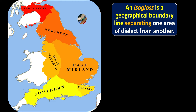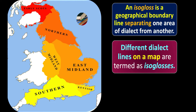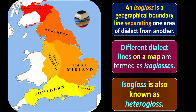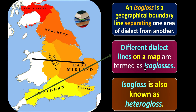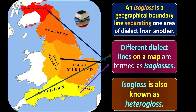Keeping this discussion in view, an isogloss is a geographical boundary line separating one area of dialect from another. Different dialect lines on a map are termed as isoglosses. It is also known as a heterogloss. Looking at the map, we can identify different lines — second line, third line, fourth line, fifth line, sixth line — each separating one dialect from another, and these are all termed as isoglosses.